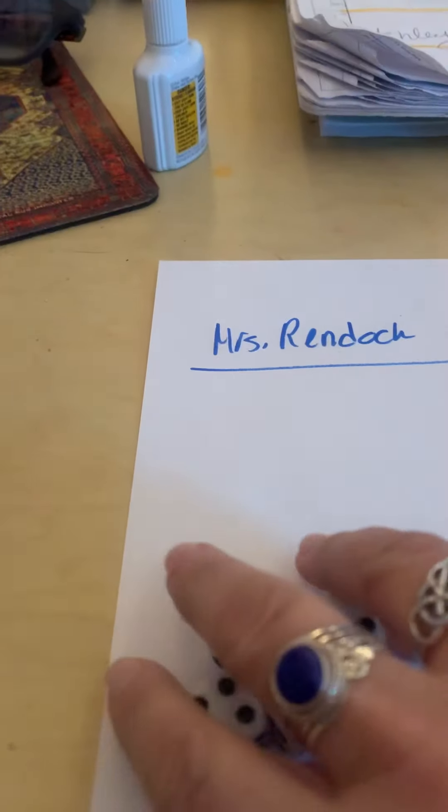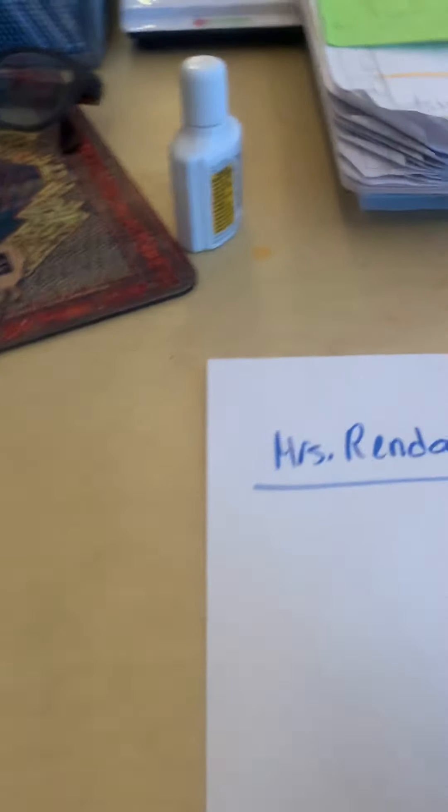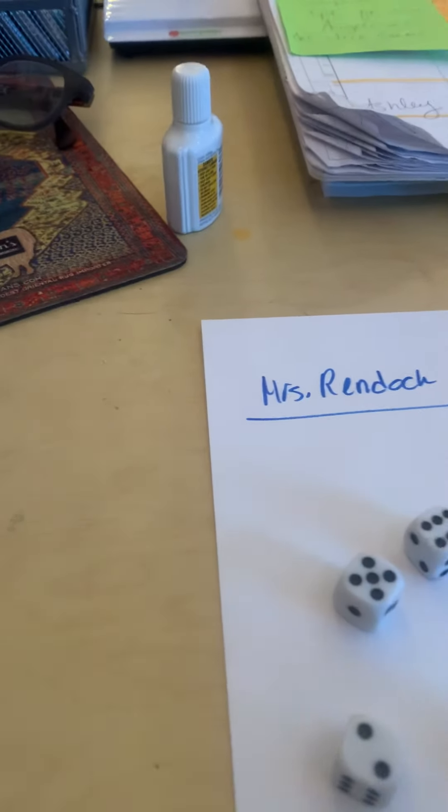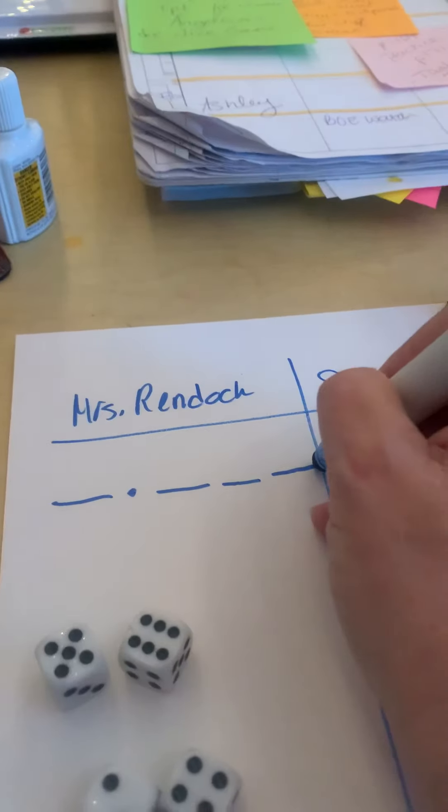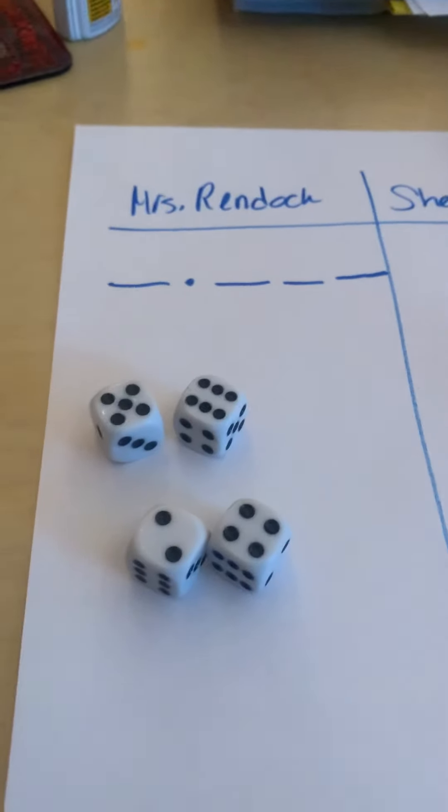Okay, so I'm going to roll first and I'm going to roll my four dice. And I am going to ask you to make a whole number with three decimal places.